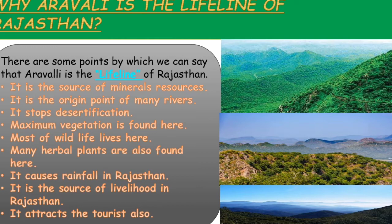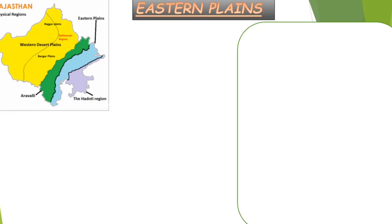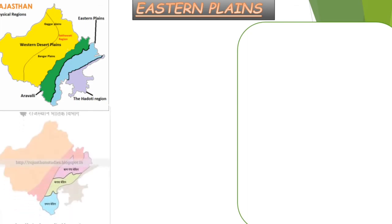Let's talk about the Eastern Plains. The blue color part on the map is the Eastern Plain. The Eastern Plains consist of three parts: the Banas plain, the Chambal plain, and the Mahi plain. These three river-based parts together form the Eastern Plains.